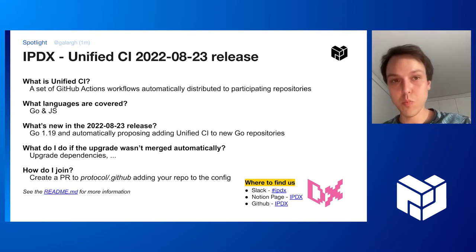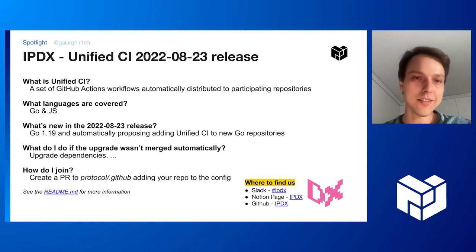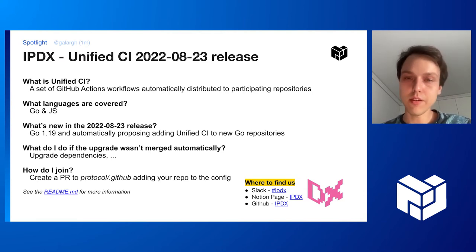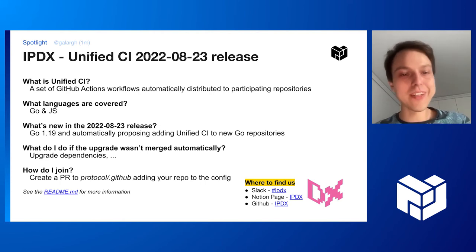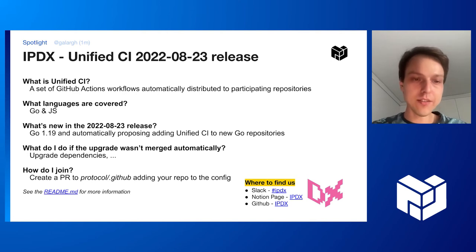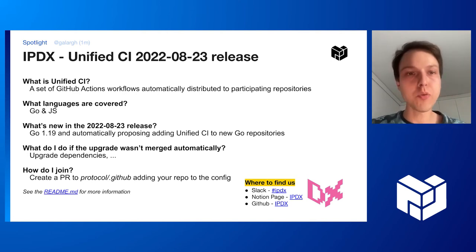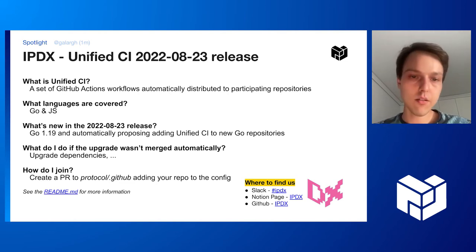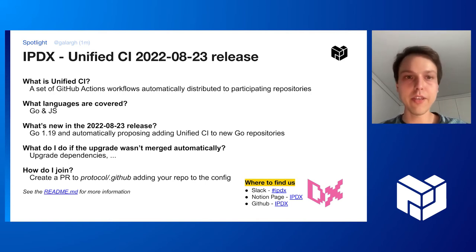If you want to participate, it's as easy as creating a single PR to the protocol.github repo with the name of the repo you're interested in adding. In the most recent release, the main thing that's new is Go 1.19 support. We dropped Go 1.17 support from our Go workflows, which means all participating repositories are free to use generics now, which is the most exciting thing.